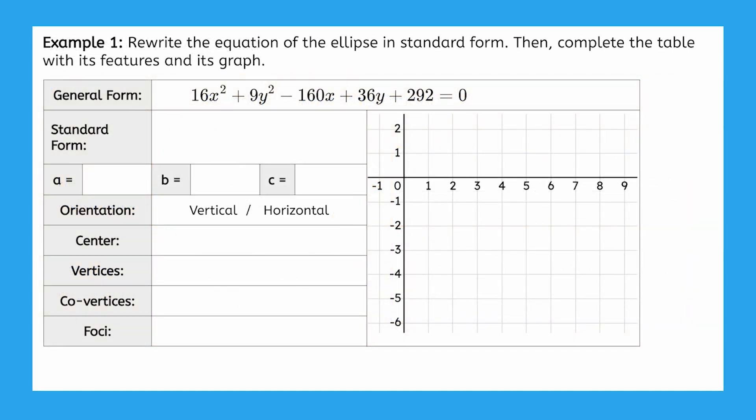Let's look at another ellipse that is not centered at the origin. But this time, we'll start off with its equation in general form: 16x squared plus 9y squared minus 160x plus 36y plus 292 equals 0. We are asked to rewrite the equation of the ellipse in standard form, and then complete the table with its features and its graph.